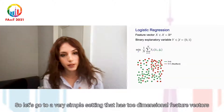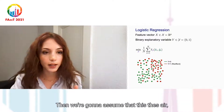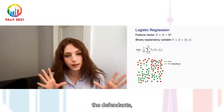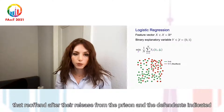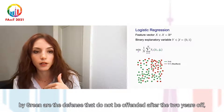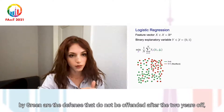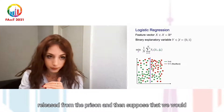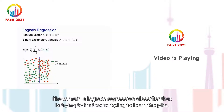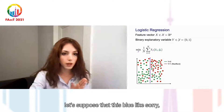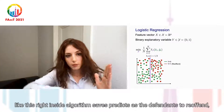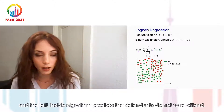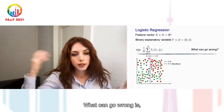Let's go to a very simple setting with two-dimensional feature vectors. We assume these are the features of defendants. Y equals 1, indicated by red, are defendants that re-offend after release from prison. Defendants indicated by green do not re-offend after two years of release. Suppose we train a logistic regression classifier to learn beta, and after training, the purple line is the decision boundary. The right-hand side predicts defendants as re-offending, and the left-hand side predicts defendants as not re-offending.